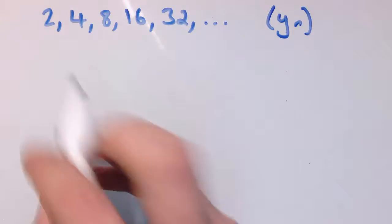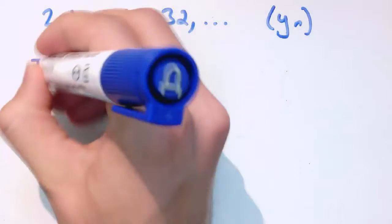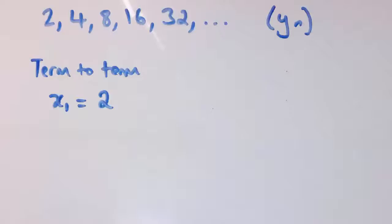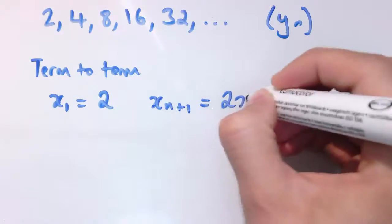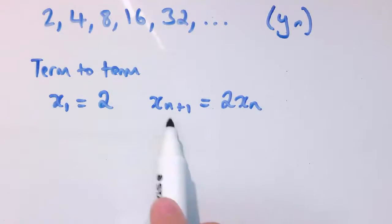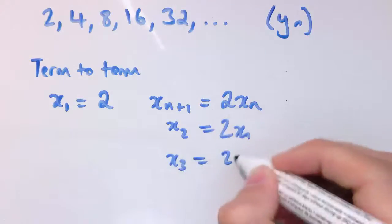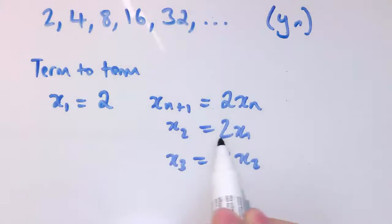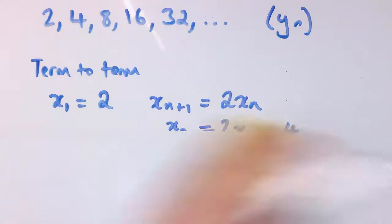Here's another sequence: 2, 4, 8, 16, 32. Let's call this yn. It's a doubling sequence, just doubling every time. For an iterative definition, I need to specify the first term: y1 is 2. To go from one term to the next I just double, so yn plus 1 is 2 times yn. Putting n equals 1 gives y2 is 2 times y1, which is 4. Then y3 is 2 times y2, which is 8, and so on. That specifies the whole sequence.